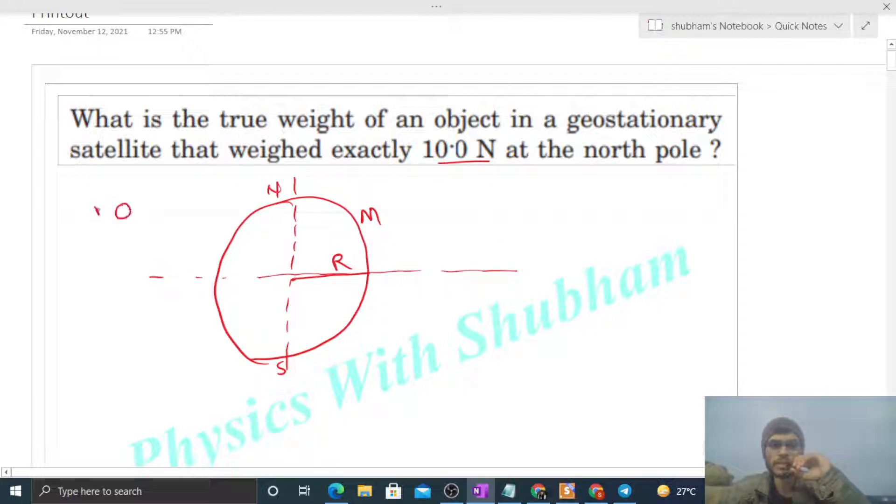Now an object of mass small m has a weight of 10 Newton at the north pole. So at north pole, what is the weight? That is the force exerted by the Earth on the object: capital G capital M small m divided by capital R square. That is given as 10 Newton. Earth's rotation has no effect at the poles.